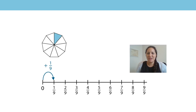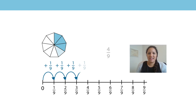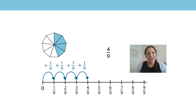Now let's count up in ninths to work out how much of the shape has been shaded. One ninth and another one ninth and another one ninth and another one ninth make four ninths.